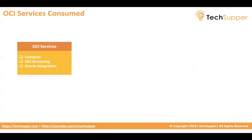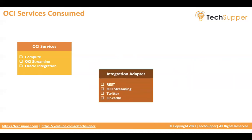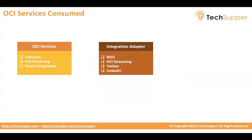So that is the complete architecture I have created in Oracle Integration. The services I have used: a Compute instance — I installed the OIC agent there to connect to OCI Streaming and the wallet. The three services used are: OCI Streaming, Compute, and Oracle Integration. For integration adapters, I have used the REST adapter, OCI Streaming adapter, Twitter adapter, and LinkedIn adapter.